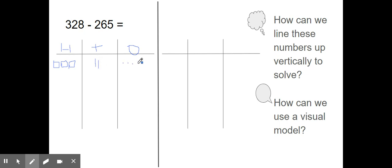328 has two tens and eight ones. 1, 2, 3, 4, 5, 6, 7, 8. Should we also model 265? No, we shouldn't. We're taking away 265, so we don't need to model it. Let's start with our ones. We always start with our ones when we're adding or subtracting.